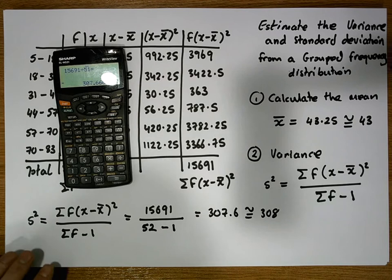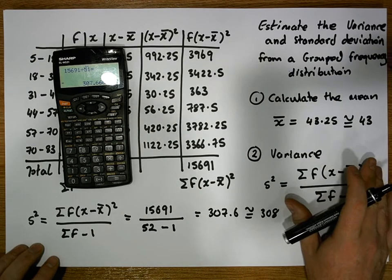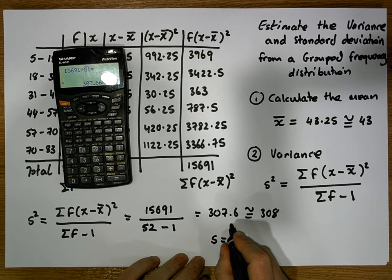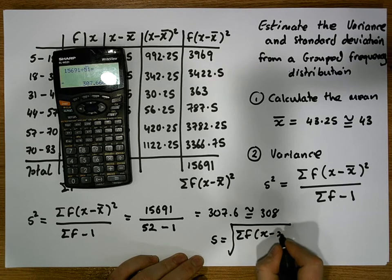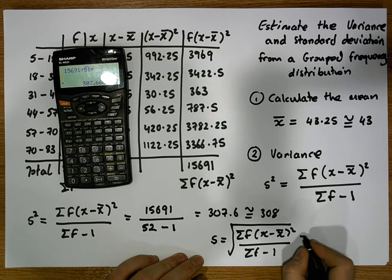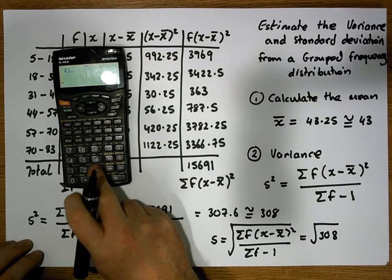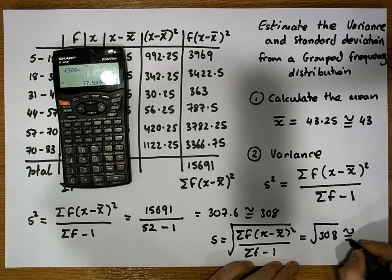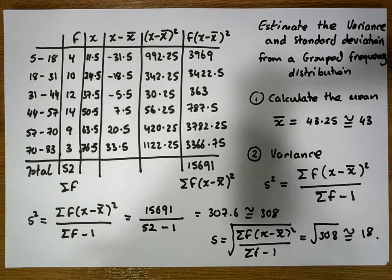The standard deviation is simply the square root of the variance. So s equals the square root of the sum of f times (x minus x̄) squared divided by the sum of frequencies minus 1, which equals the square root of 308, giving us approximately 17.54, or roughly 18.